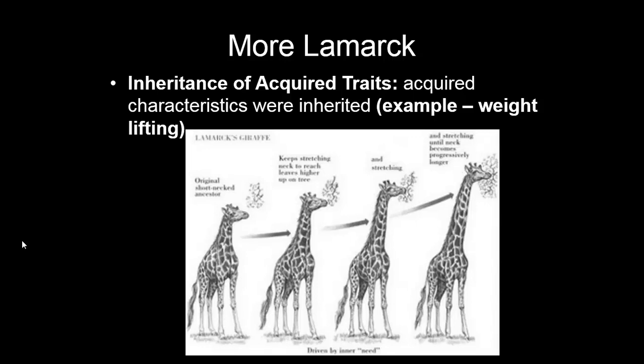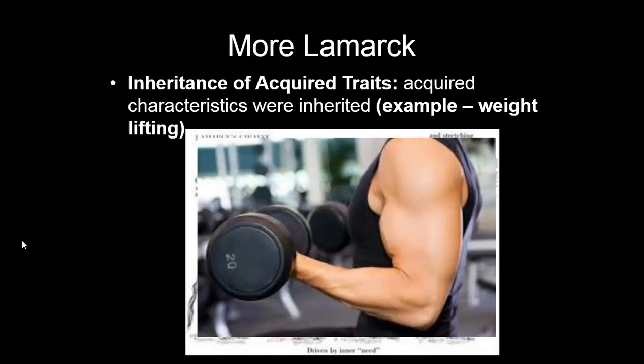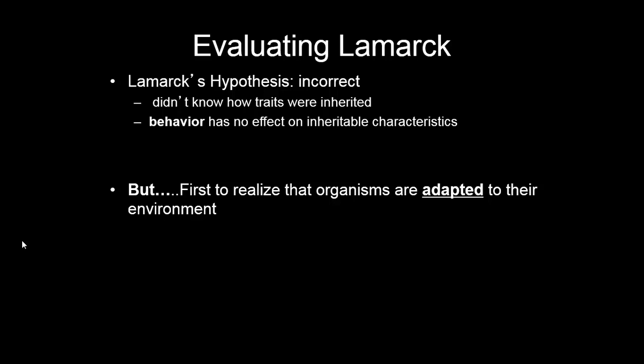The inheritance of acquired traits looks like this: acquired characteristics are inherited, so a giraffe needs a long neck, it uses its long neck, so it has a long neck, and passes that on to its offspring. An example would be weight lifting — if I lift a ton of weights and get very strong, just because I have big muscles, am I going to produce a child with big muscles? Most likely not. Lamarck tried to explain evolution; however, people realized it wasn't quite possible, and he was ridiculed for his ideas. We still remember Lamarck for good reason though — he was the first to realize that organisms are adapted to their environment and he took an attempt at explaining how evolution could work. He didn't know how traits were inherited, he thought behavior affected your traits and it really doesn't, so he was disproven. But he did pave the way for others like Darwin.